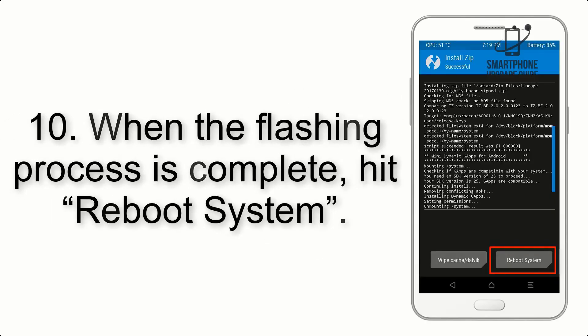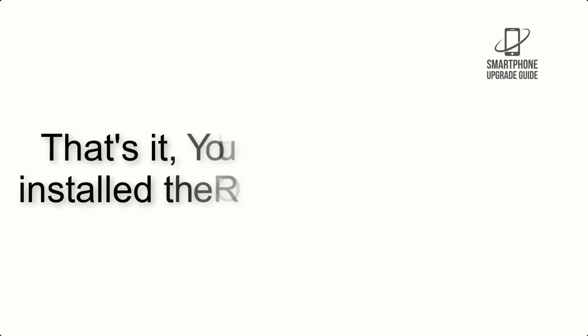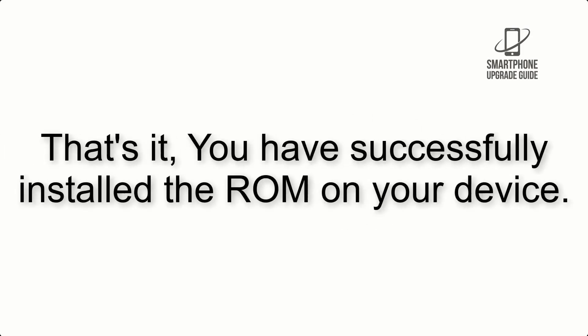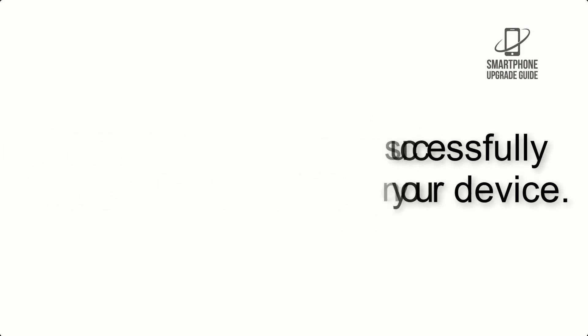After GApps flashing completes, select Wipe Cache and Dalvik from the bottom left side of the screen and swipe to wipe. Step 10: When the flashing process is complete, hit Reboot System. That's it — you have successfully installed the ROM on your device.